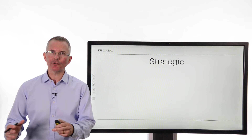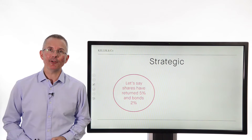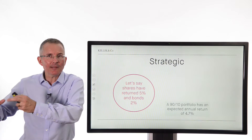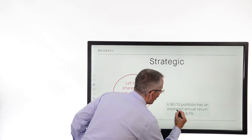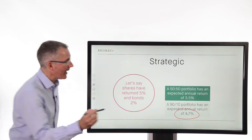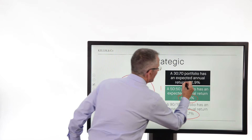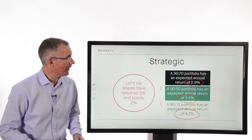Types of asset allocation — you will see these words bandied around. Strategic, first of all. Let's say shares have returned 5% and bonds 2% historically, completely for illustration. Typically, shares do tend to return more than bonds over a 50- to 60-year period. So a 90-10 portfolio — purely for illustration — would be 90% in shares and a little bit in bonds. That gives an annual expected return of 4.7%. If you bring down the number of shares and increase bonds, you'd correctly expect that to drop — let's say to 3.5%. Or you could go for 30-70, more bonds than shares, where the annual expected return is only 2.9%.